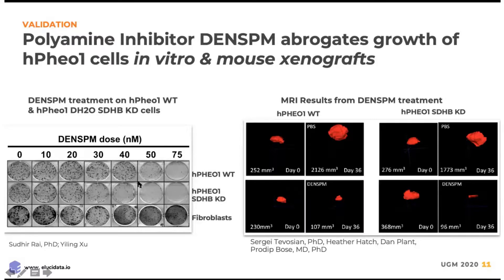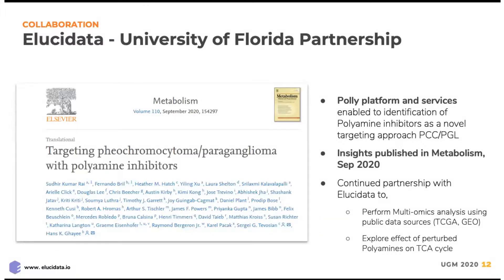We moved further and did in vivo experiments making mouse xenograft models from both the wild-type and the SDHB knockdown cell lines. We see that with PBS-treated arms in both xenografts, tumors continue to grow from day zero to day 36, whereas with diethylnorspermine treatment, we see a really nice shrinkage in tumors compared to the PBS samples. This was very exciting news and led to a publication in Metabolism, made possible through our partnership with Elucidata.